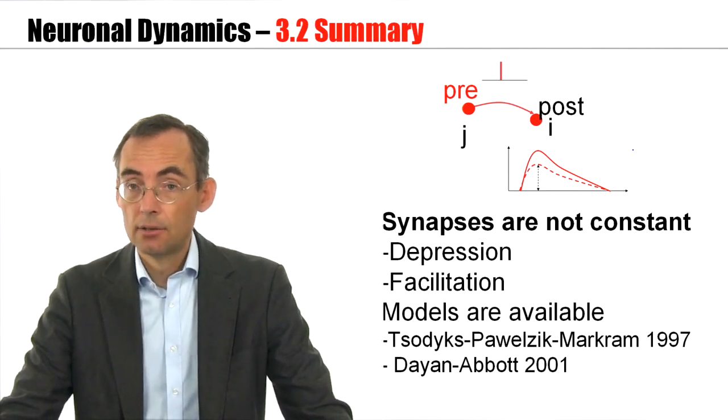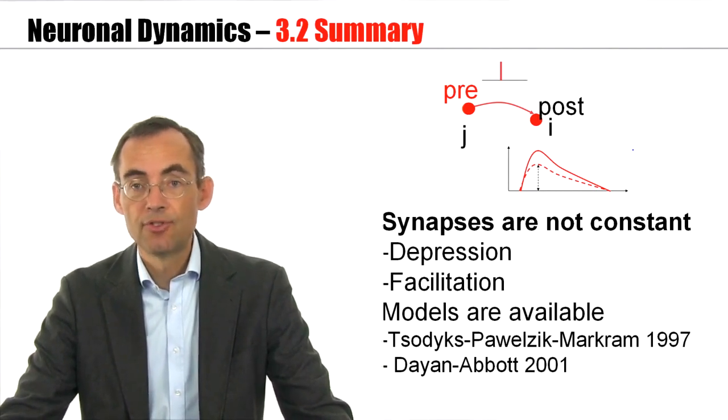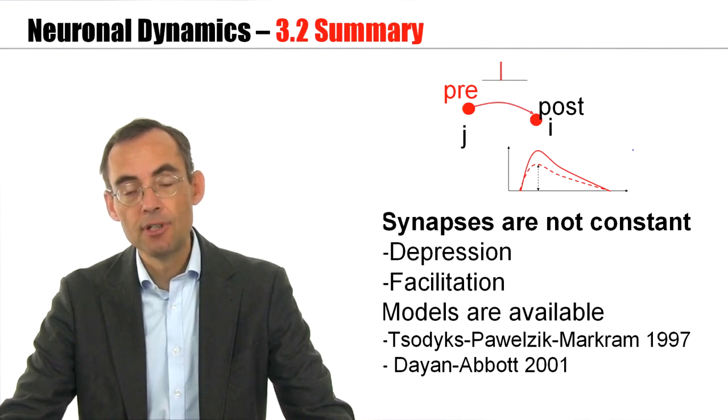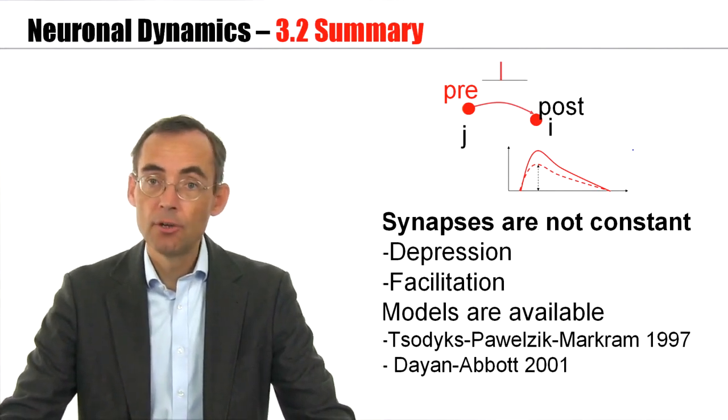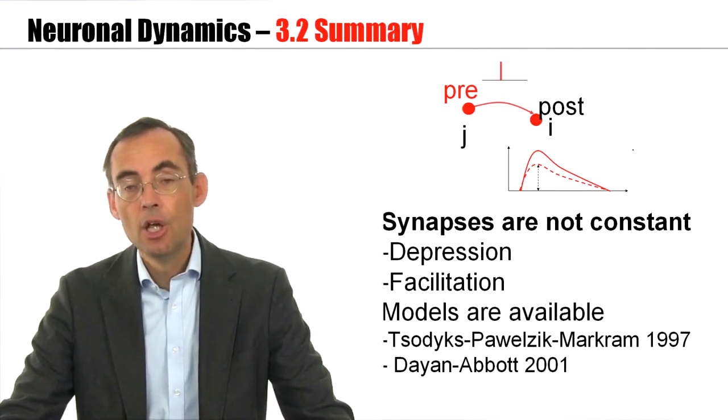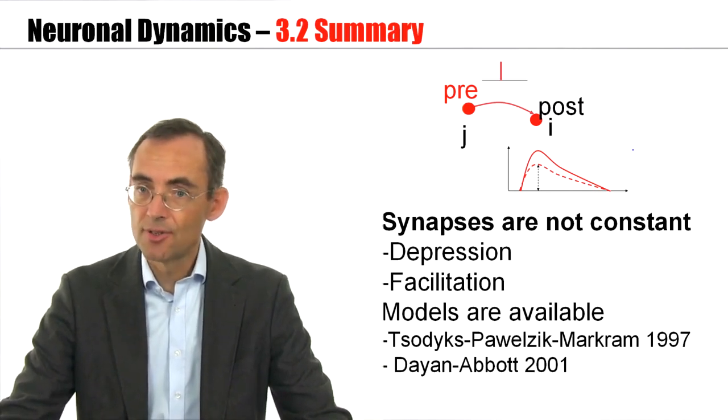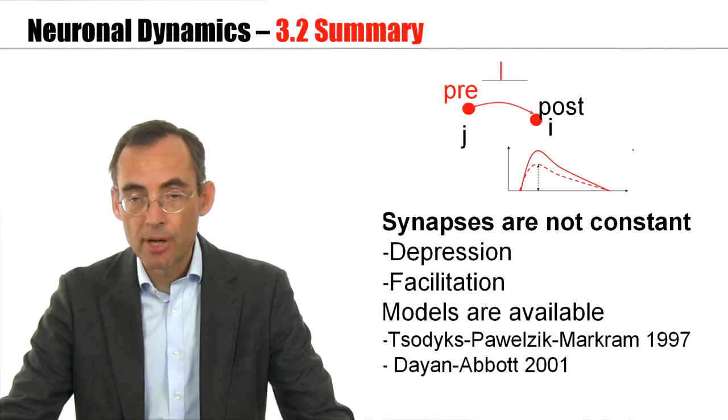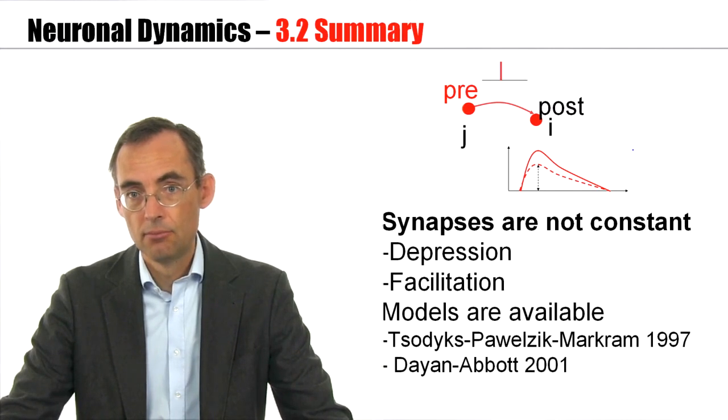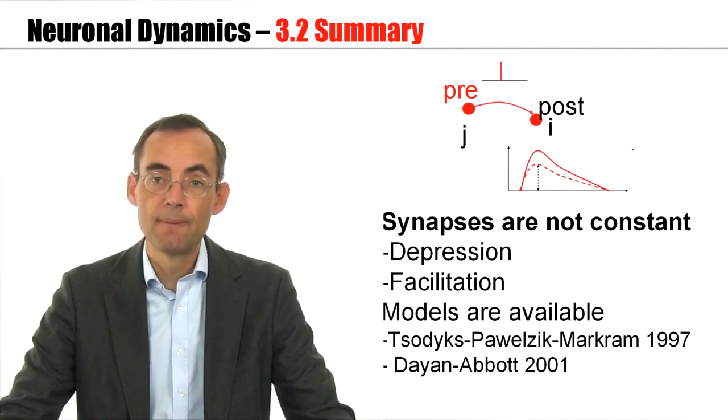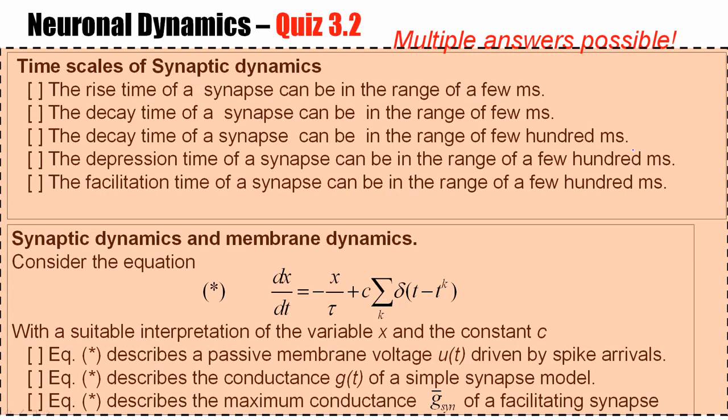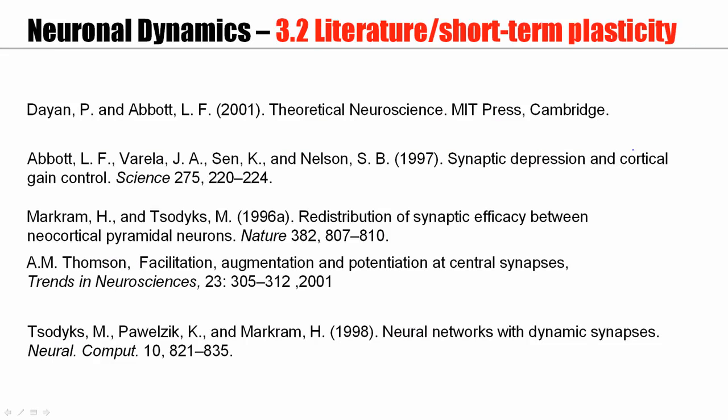To summarize, synapses are not constant. They change all the time. Synapses show facilitation. They can get stronger. They show depression. They can get weaker. The model I've discussed here can be found in the book of Dayan and Abbott. It's a simple model which treats facilitation and depression separately. There is a slightly more complicated model, but of the same structure, by Markram, Tsodyks, Pawelzik, which allows to describe facilitation and depression within the same synapse, because that's observed. Some synapses show both facilitation and depression. So with this, I would like to close our discussion of synapses. Please take some time to look at the quiz that we have prepared for you, and here is also some literature for synaptic facilitation, depression, and synaptic modeling.